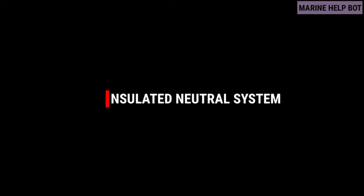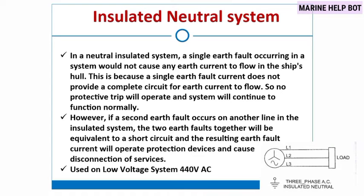Moving towards the first question: insulated neutral system. The insulated neutral system is also known as the neutral insulated system. In a neutral insulated system, a single earth fault occurring in a system would not cause any earth current to flow in the ship's hull. This is because a single earth fault current does not provide a complete circuit for earth current, so no protective trip will operate and the system will continue to function normally.